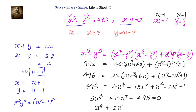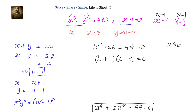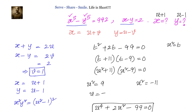Taking u squared equals t, the equation becomes t squared plus 2t minus 99 equals 0. Splitting the middle term: t plus 11 times t minus 9 equals 0. Since t equals u squared, we get u squared plus 11 times u squared minus 9 equals 0. This gives u squared equals minus 11, so u equals plus or minus square root of minus 11, or u squared equals 9, so u equals plus or minus 3.